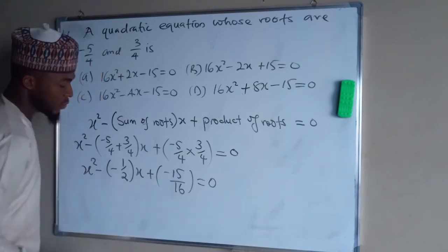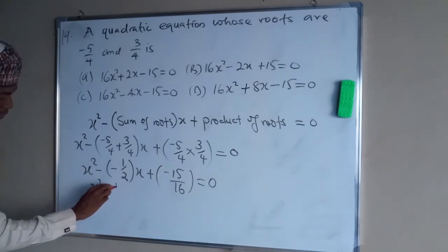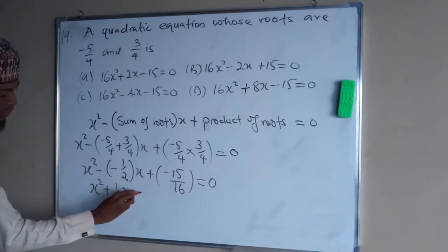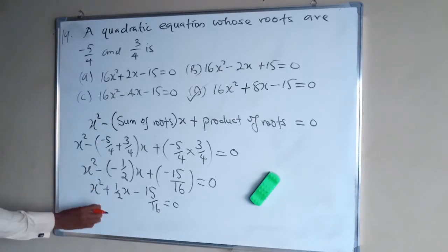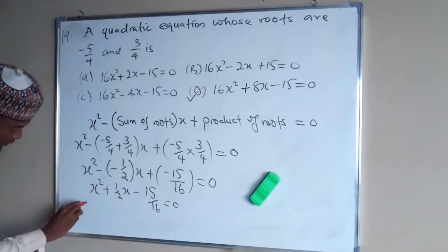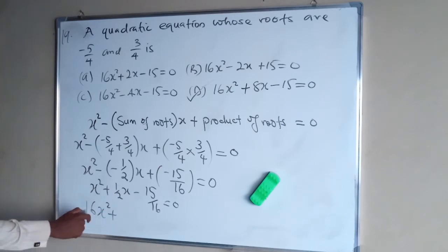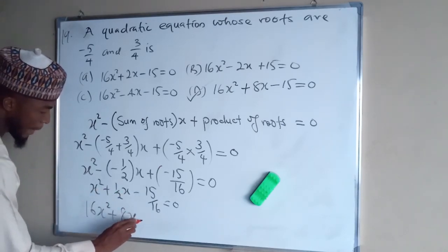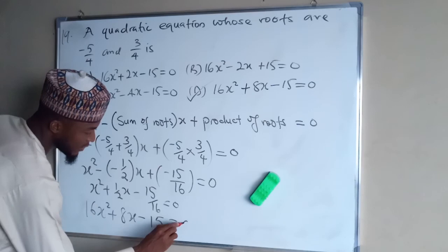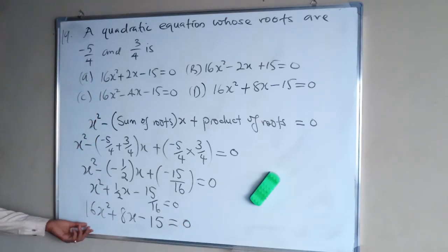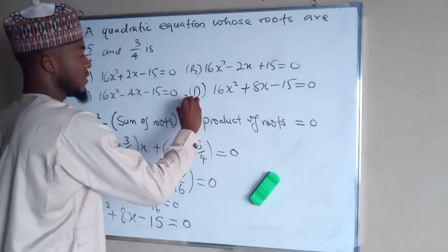This simplifies to x² + (1/2)x − 15/16 = 0. Multiplying throughout by 16 (the LCM): 16x² plus 8x minus 15 = 0. This is the quadratic equation whose roots are minus 5/4 and 3/4, and the right option is D.